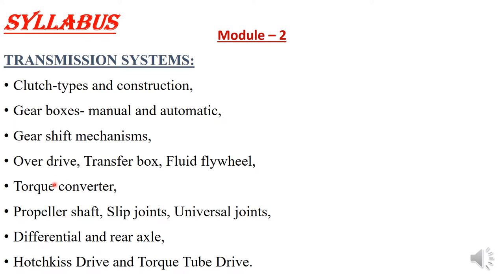The transmission system also includes the load drive, flywheel, torque converter, propeller shaft, universal joint, differential, and axle. Then the driving system — that is axle kit drive and torque table drive. This is about the transmission system. This is a very lengthy module when compared to other modules.